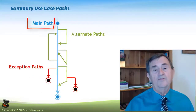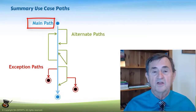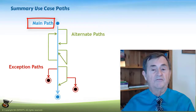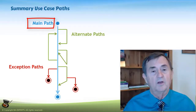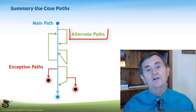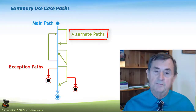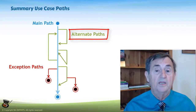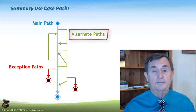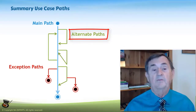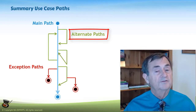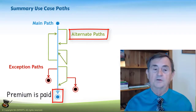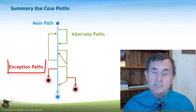To sum it up: we have the main path, which covers common conditions where nothing goes wrong — everything works fine, the customer pays the premium, they have a valid credit card, life is wonderful. Then there are alternate paths where, for example, some customers might not want to pay with a credit card — they want to pay with an electronic money order, a debit card, or PayPal. Each of those would be an alternative, all ending with the customer's premium being paid. Or I have an exception path — for instance, the customer's credit card is rejected.